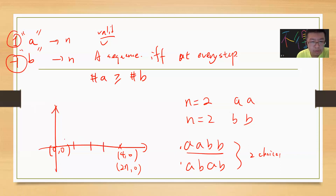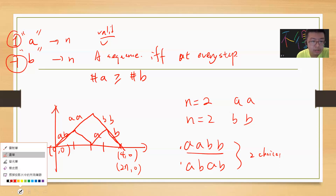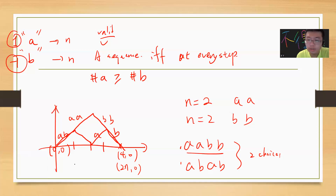So the first valid sequence is A, A, B, B, and the second is A, B, A, B. The rest are not allowed. For example, if B comes first it's not allowed because the running sum would go negative. So in this case we have two valid choices.